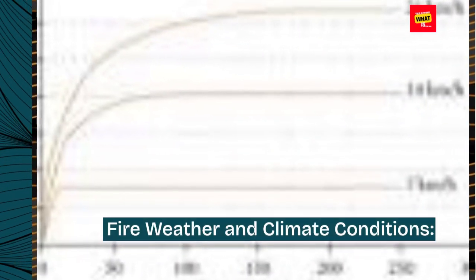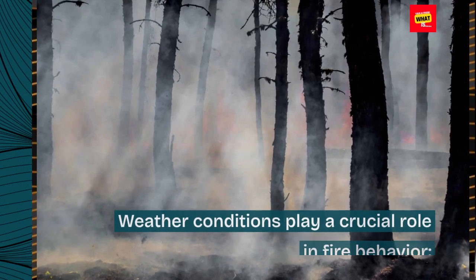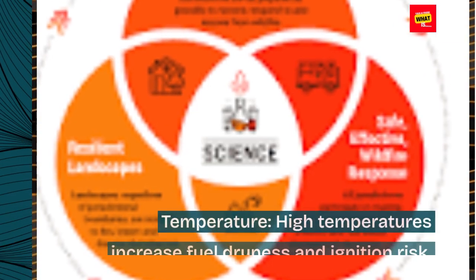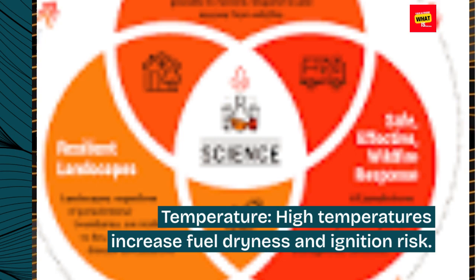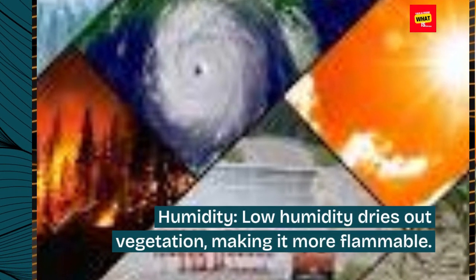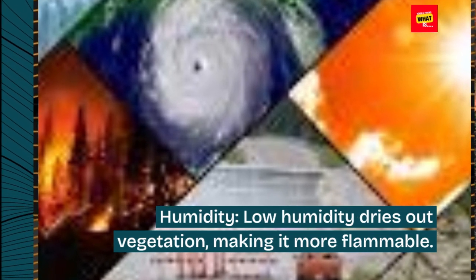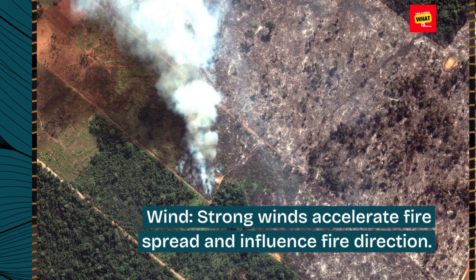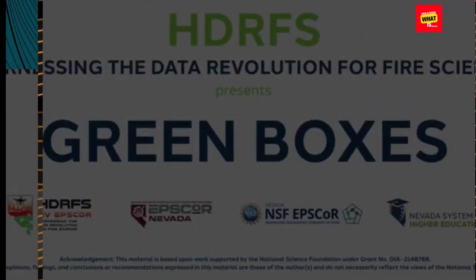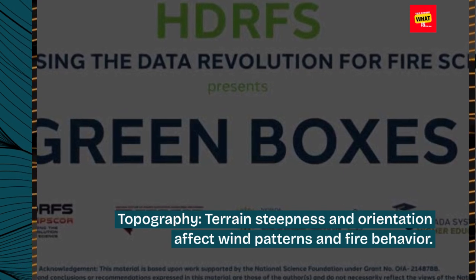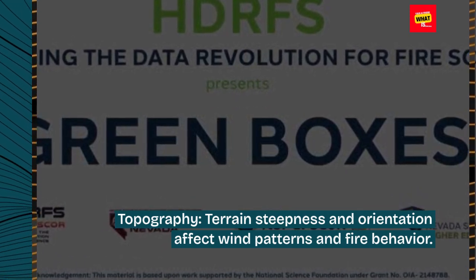Fire Weather and Climate Conditions: Weather conditions play a crucial role in fire behavior. High temperatures increase fuel dryness and ignition risk. Low humidity dries out vegetation, making it more flammable. Strong winds accelerate fire spread and influence fire direction. Topography — terrain steepness and orientation — also affects wind patterns and fire behavior.